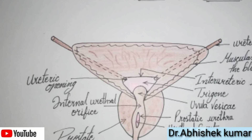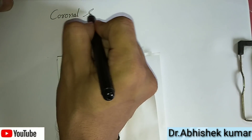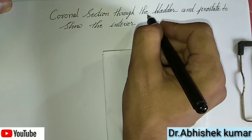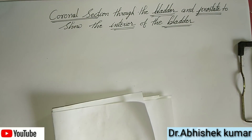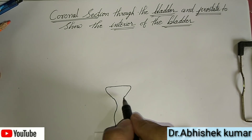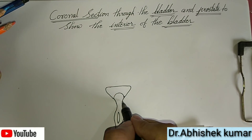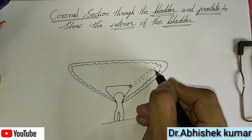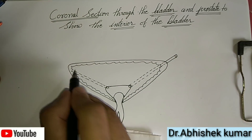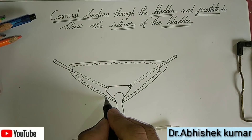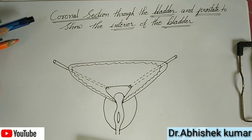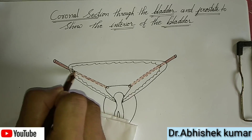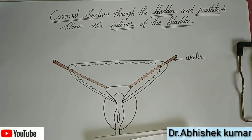Now we come to the coronal section through the bladder and prostate, showing the interior of the bladder. Here we will make one triangular structure — this is the trigone. The small triangular area over the lower part of the base of the bladder where the mucosa is smooth due to its firm attachment to the muscular coat is known as the trigone. The apex of the trigone is directed downward and forward, and the internal urethral orifice opening into the urethra is located here. The ureter is shown in brown color.